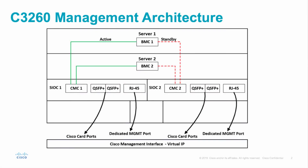Let's talk about the C3260 management architecture. The C3260 can have up to two server nodes, each server node having its own baseboard management controller or BMC. The C3260 can also have up to two system IO controllers or SIOC. Each of these SIOCs has its own dedicated chassis management controller or CMC, along with two QSFP ports or Cisco card ports, and one dedicated RJ45 management port.